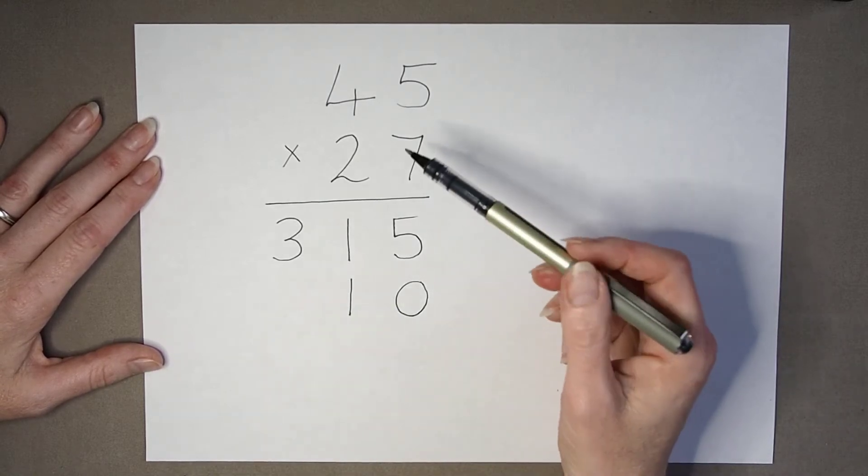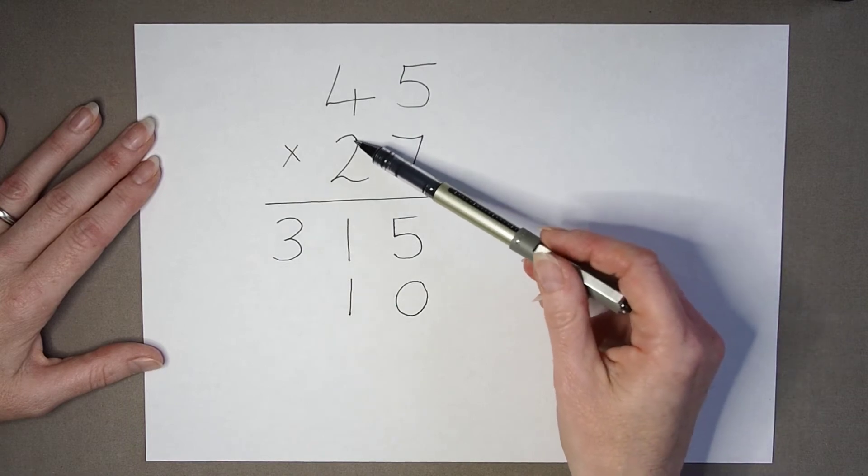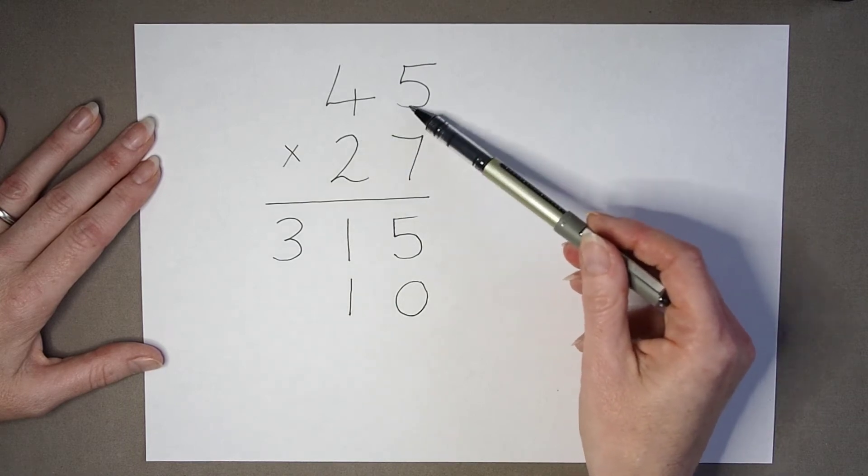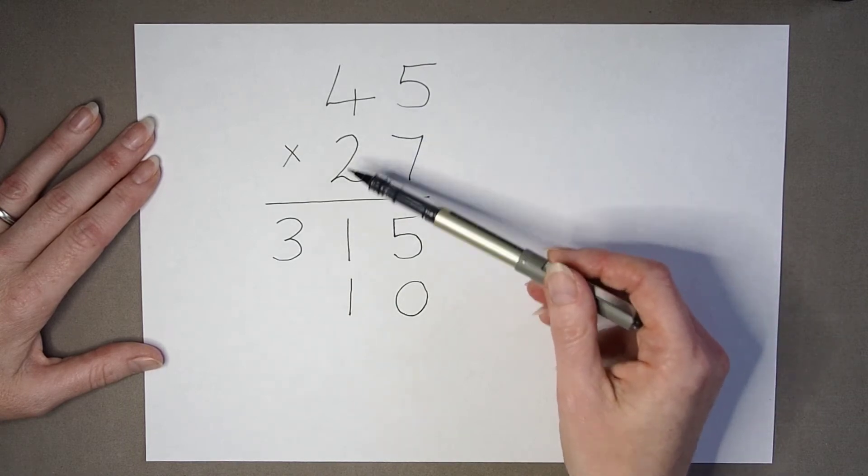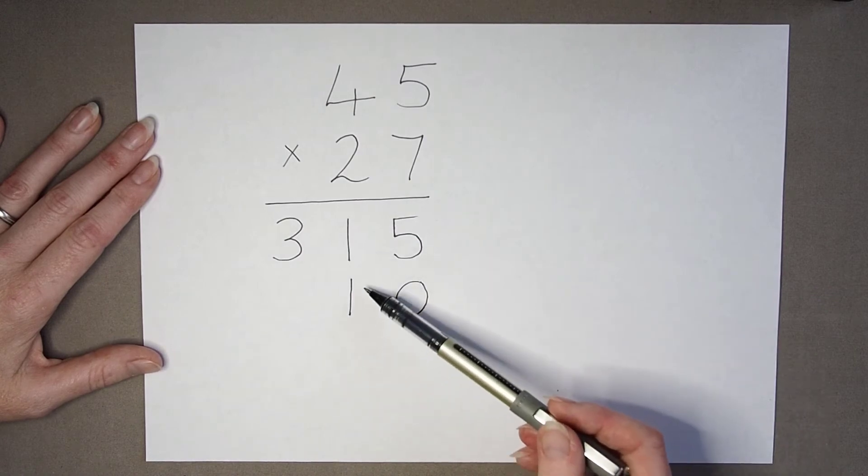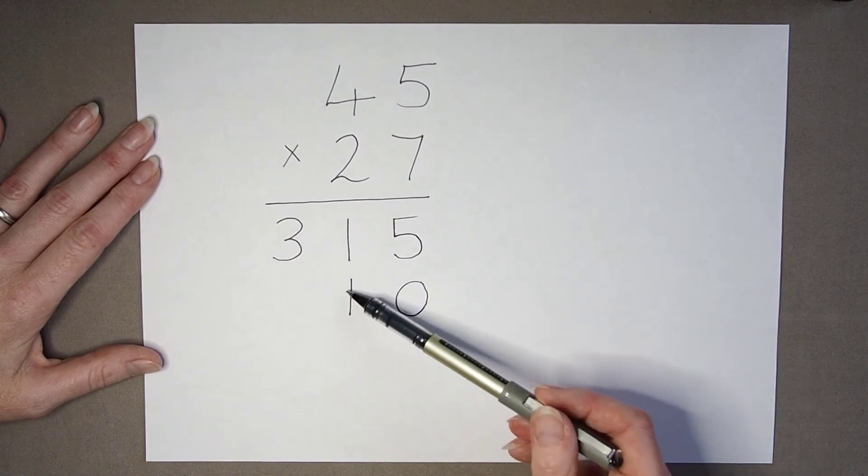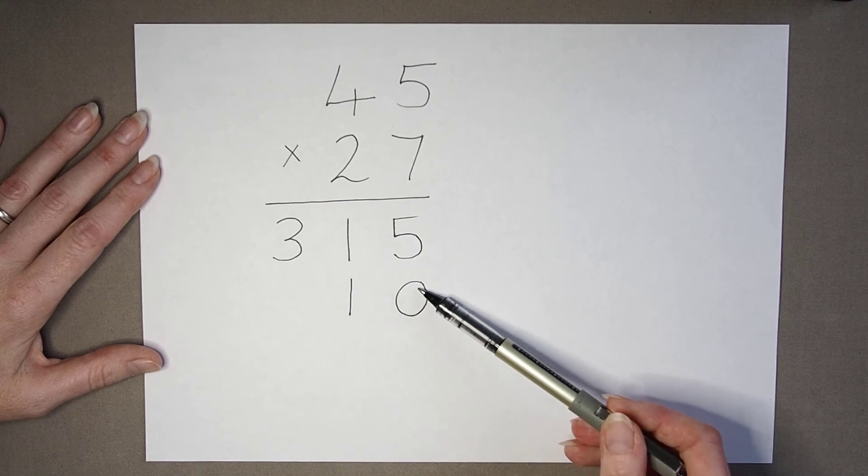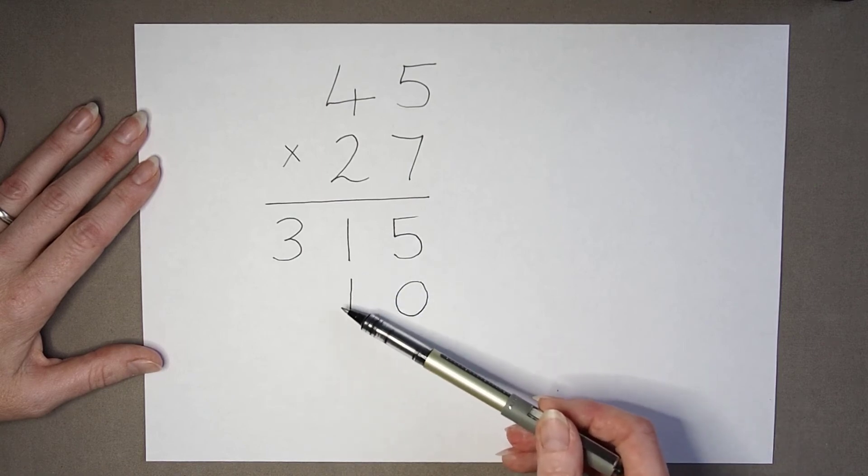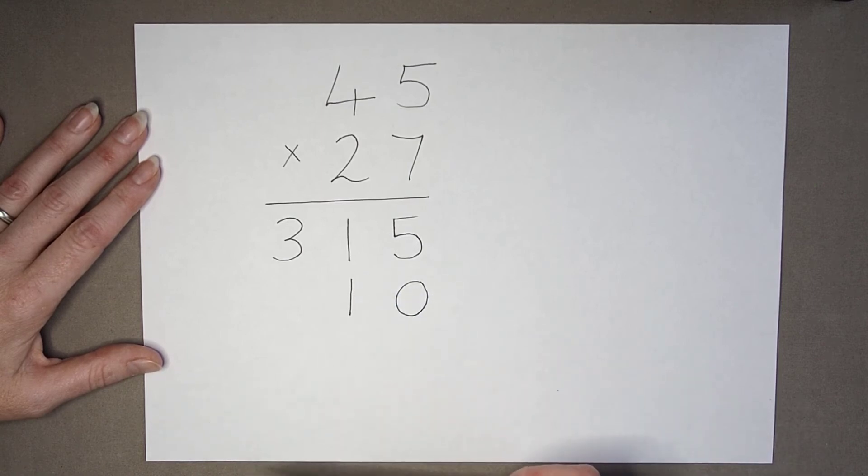So, it's important to sometimes have calculations where this calculation here is going to end in a 0, so they get used to seeing that they may need to write a second 0. They've got one placeholder already, but they may actually need another one in their answer as they carry on their working out.